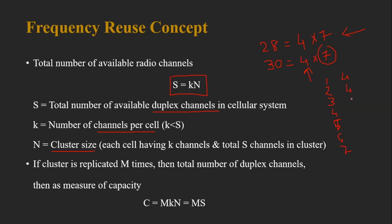For example, with S=30 and N=7, we might allocate 4 channels to the first three cells, allocate 5 channels to the next two high-traffic cells, keep 4 for another, and allocate 5 to the seventh cell with extra traffic. In this way all 30 radio channels are utilized efficiently. This is how the channel allocation calculation is done.